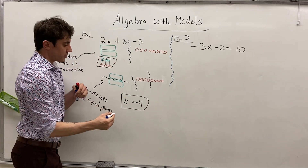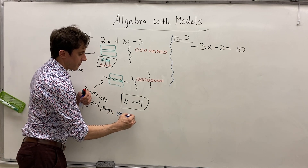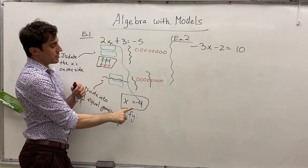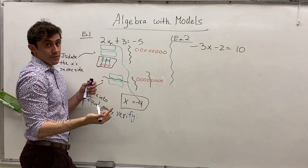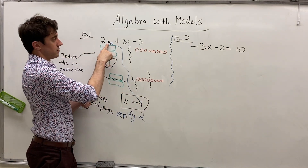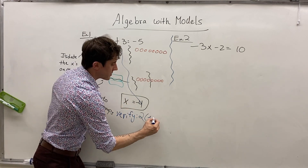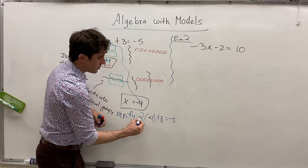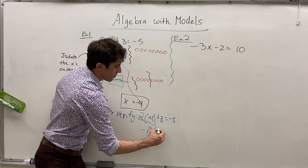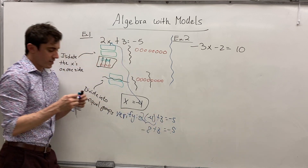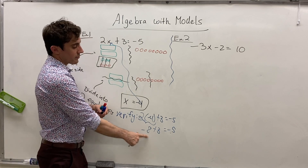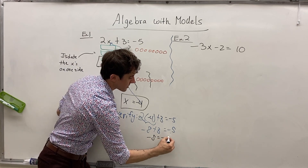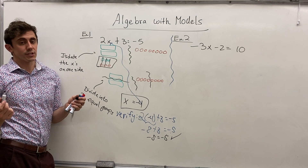If we want to verify that our solution is indeed correct, we can simply plug in the solution we got back into the original equation — substitute x equals negative four in for x and see if it works out. We replace the x in 2x with negative four: two times negative four plus three equals negative five. Two times negative four is negative eight, plus three equals negative five. Negative eight plus three is negative five, and so both sides are indeed equal. We know our solution is correct.